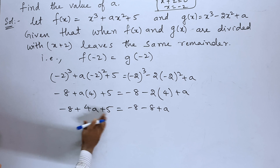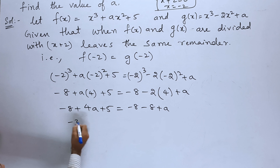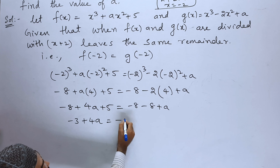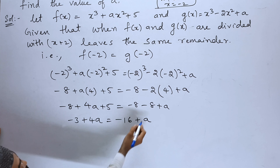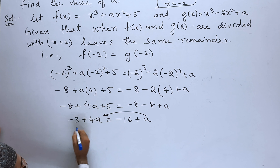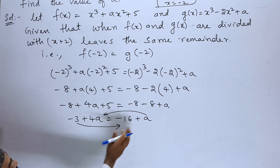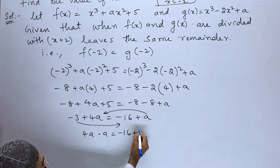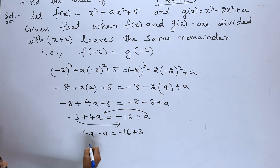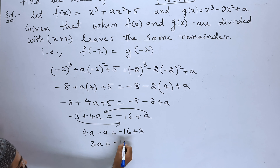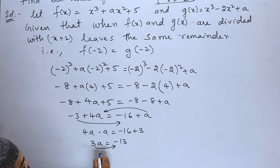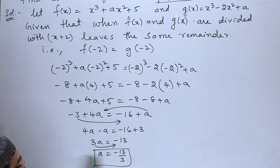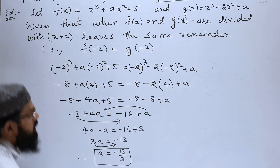Rearranging: 4a − a = −16 + 3, so 3a = −13. Therefore the value of a is −13/3.